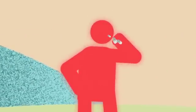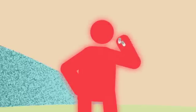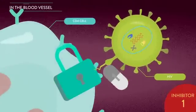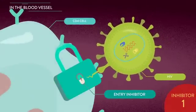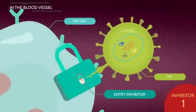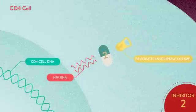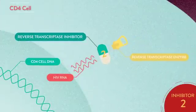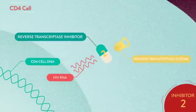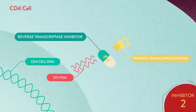There is no cure for HIV, but antiretroviral medication, or ARVs, reduce HIV reproduction by interrupting the HIV life cycle. Entry inhibitors prevent HIV material from entering CD4 cells, while reverse transcriptase inhibitors stop the reverse transcriptase enzymes from converting HIV RNA into HIV DNA.